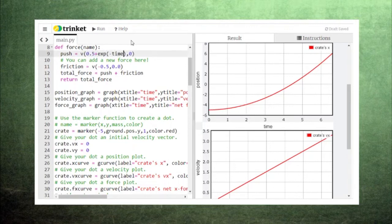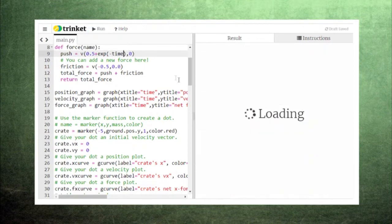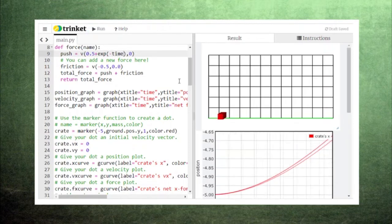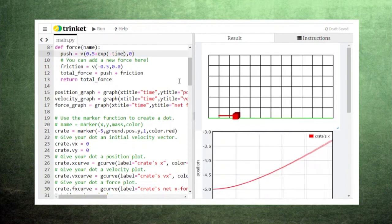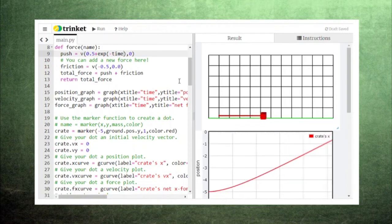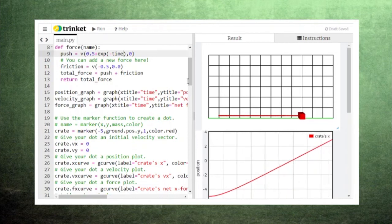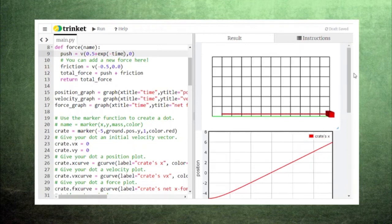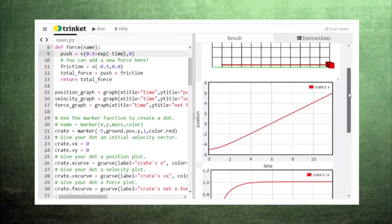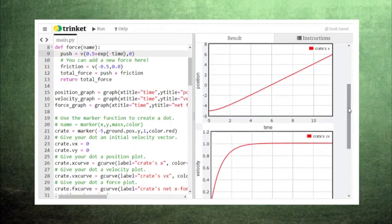The function one-half plus e to the negative time fits this description. If we use this force in competition with our friction force, we see that our crate initially accelerates, but levels off at a steady final velocity. This means that the crate's position graph looks more like a line at the end of the motion. This is a much more realistic model of how human beings slide large objects across the floor.